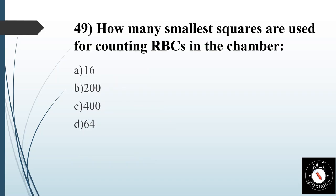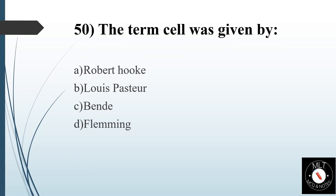Forty-ninth question. How many smallest squares are used for counting RBCs in the chamber? Option A: 16. Option B: 200. Option C: 400. Option D: 64. Answer is Option C: 400.